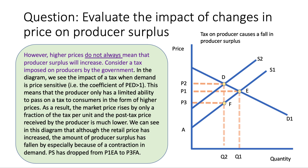When the tax is imposed, the producer only has a fairly modest ability to pass on the tax to the consumer via a higher price. Originally the equilibrium was at price P1, output Q1. After the tax, the price rises from P1 to P2, but that's only a small proportion of the total tax — the tax is actually the vertical distance DF. So the producer has been able to pass on some of the tax but not the majority of it. The consumer pays price P2, and the government gets the tax revenue P2DFP3.